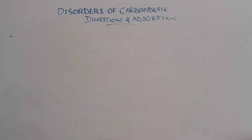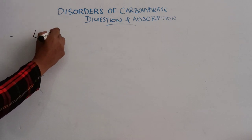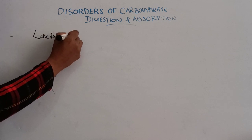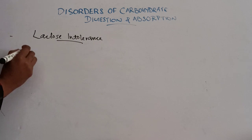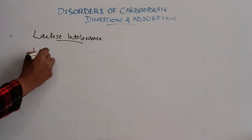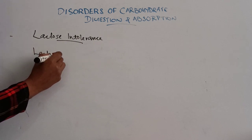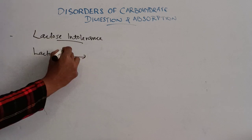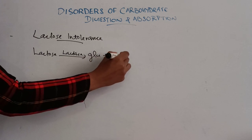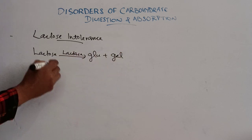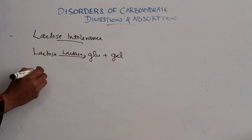Today we will discuss disorders of carbohydrate digestion and absorption. The most common disorder is lactose intolerance. Normally, lactose is digested by the action of the enzyme lactase to form glucose and galactose in the small intestine.